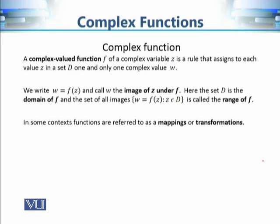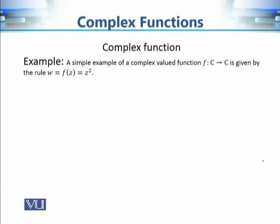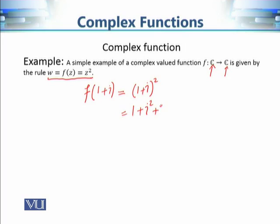A complex-valued function is also known as a mapping or transformation. Consider the simple example of a power function where f(z) = z². The domain is the entire complex plane. For instance, the image of 1 + i is (1 + i)² = 1 + 2i − 1 = 2i. We can take any complex number, square it, simplify, and obtain its image value.